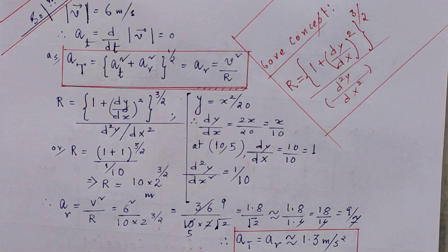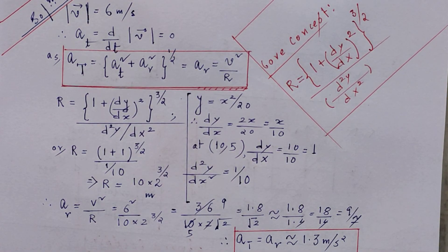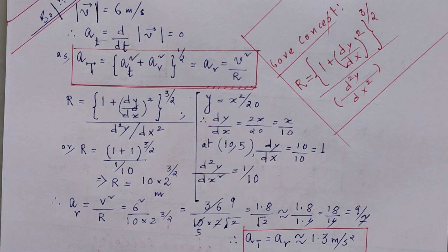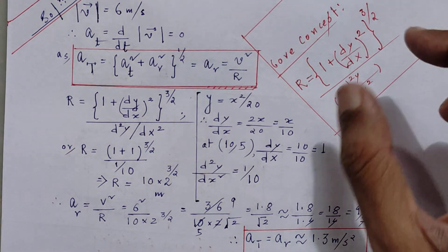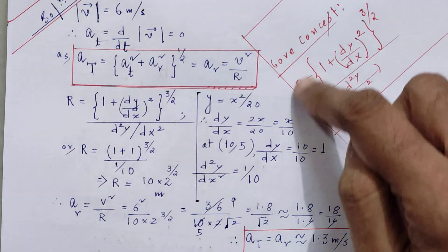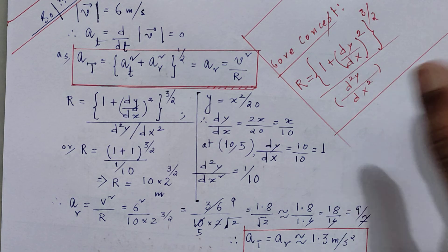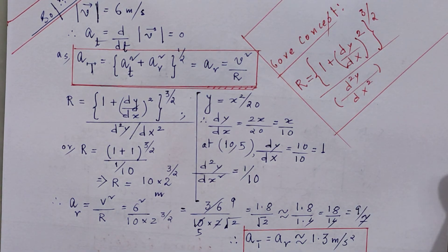So that's all with this problem. I hope this problem has cleared some fundamental concept of circular motion, and we must remember this core concept: what is the formula for radius of curvature of a curve at a particular point.